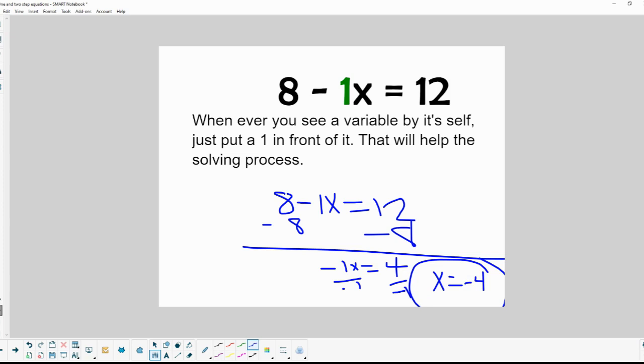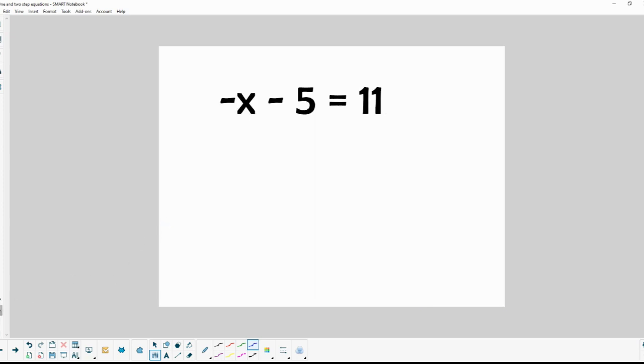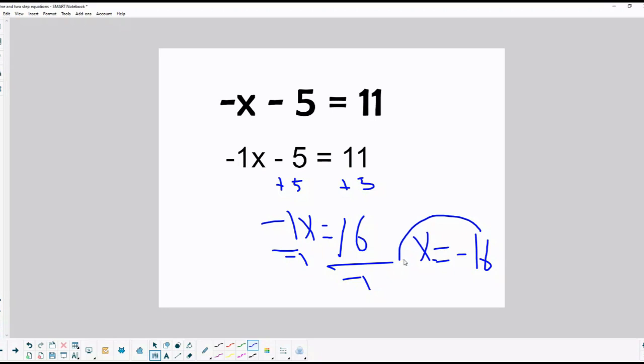So how about this one? Well, we're going to put a 1 in front of the x, so we know what we're doing with negative 1x. Then we're going to add 5 to both sides. So we'll have negative 1x equals 11 plus 5 is 16. And then all I have to do is divide by negative 1. And x is going to equal negative 16.